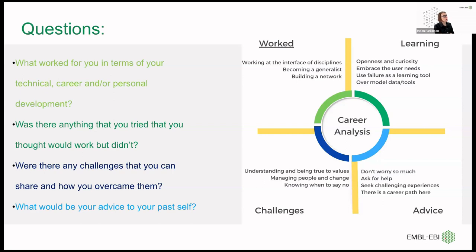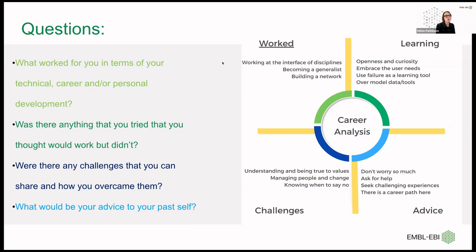You asked some questions and I've attempted to answer them. What worked is that I like working at the interface of disciplines — it's exciting, it opens up new worlds, and it means you can build a career path learning from others with different skills. Uncommonly in science, I'm not a specialist in any one thing; I'm a generalist. I know about lots of different kinds of data and software, and I'm always thinking about users. Building a good network has really worked for me, along with openness and curiosity about what other people are doing and why.